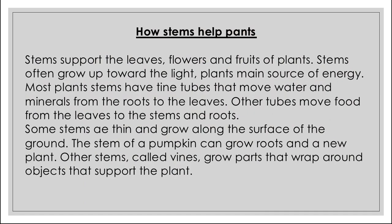The stem transfers food throughout the plant — food stored in the leaves moves to the stem, and the stem moves it down to the roots. Basically, the stem is the main part of the plant on the upper level, while the root is the main part below ground. The stem of a pumpkin can grow roots and a new plant. Other stems called vines grow and wrap around objects to support the plant.